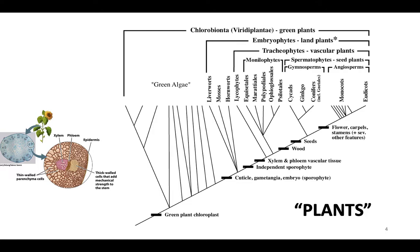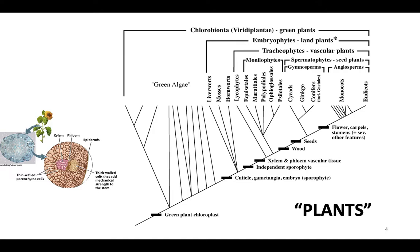To aid dispersion and ensure a thriving lineage or next generation, cones were developed for gymnosperms and flowers for angiosperms, the flowering plants. Together with the seed and other dispersion agents, these were developed to accomplish this goal.